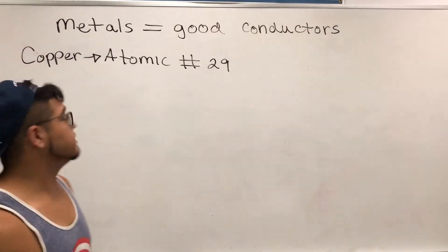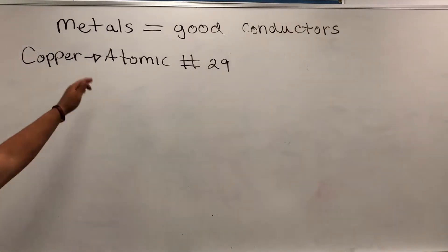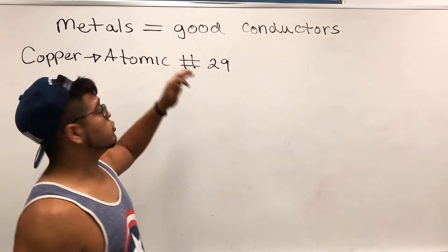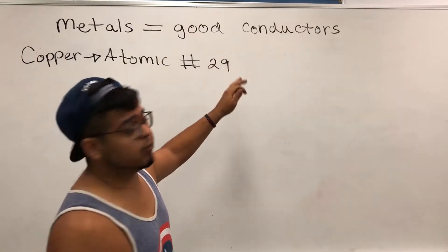What that basically means is that in a piece of copper, every atom will have 29 electrons and 29 protons.